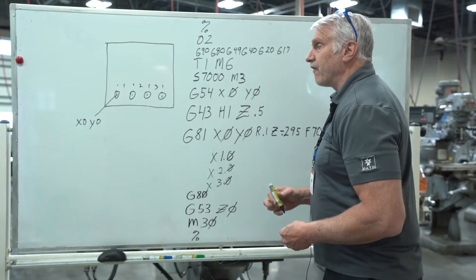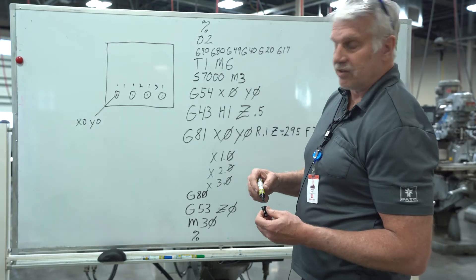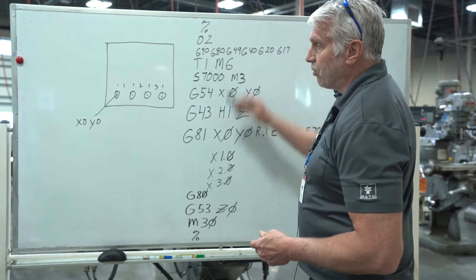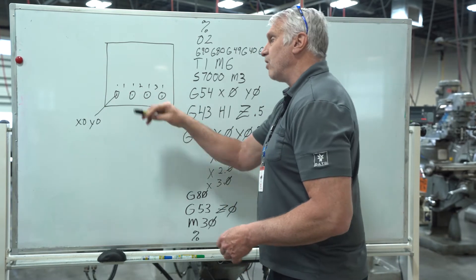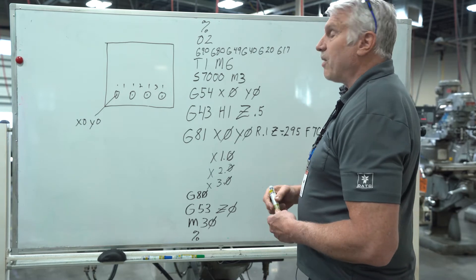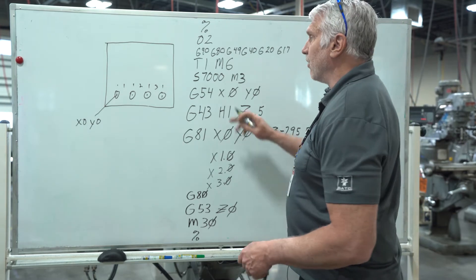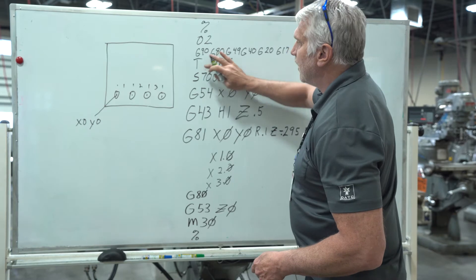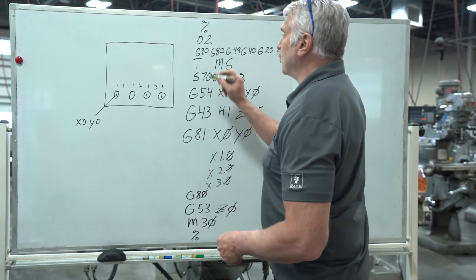Now if you've looked at our first program with our spot drill with G81, this was the whole program. This is the blueprint where all the holes are going to be, but in this particular case we're not doing a spot drill, we're doing a pecking drill. So one thing we're going to get rid of is tool number one. It becomes tool number two.